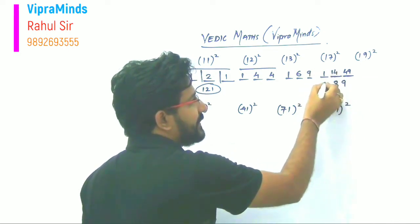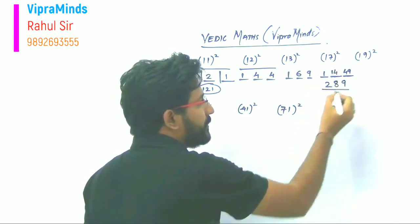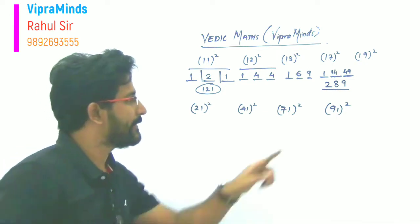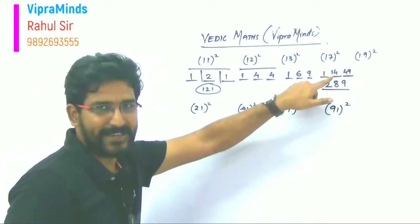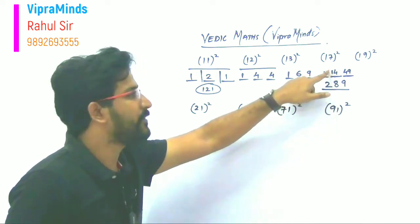So it's 49, so you have to take just 9. Four will shift here. Now four plus four is eight, or this one we will shift, one plus one becomes two. So it will be 289.